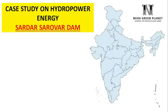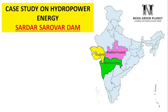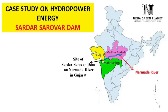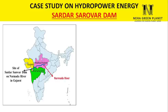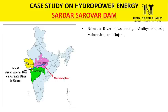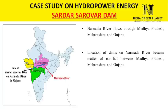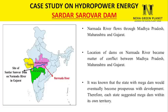Case Study: Sardar Sarovar Dam. The Narmada River is a shared water resource between Madhya Pradesh, Maharashtra, and Gujarat — originating in Madhya Pradesh, flowing through Maharashtra and Gujarat, and finally joining the Arabian Sea. Sardar Sarovar Dam is located on the Narmada River in Gujarat and is the most controversial dam in the country. The location of the dam was a matter of conflict between the three states, as the state that could construct the dam on the Narmada would prosper economically.